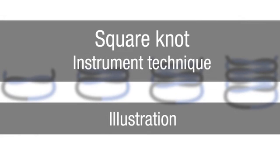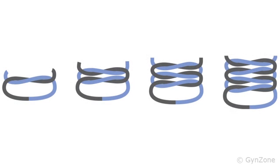In this section, you can learn how to tie a square knot. In the illustration, you can see how a square knot is constructed. It consists of four throws with a single loop in each throw.